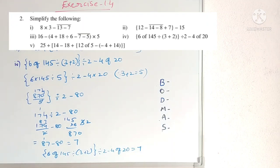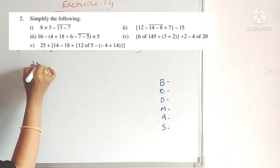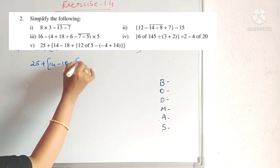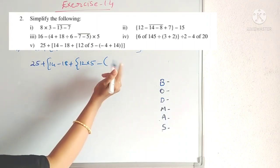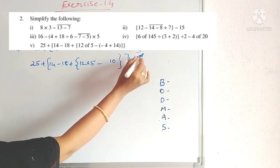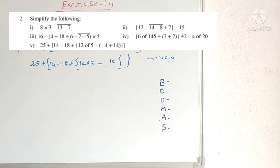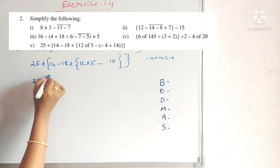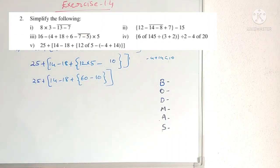Last problem of the second set: brackets and Of are there. By BODMAS, first simplify the simple bracket. The bracket contains: −4 + 14 = 10. Then Of: 12 × 5 = 60. So we get 25 + 14 − 18 + 60 − 10.